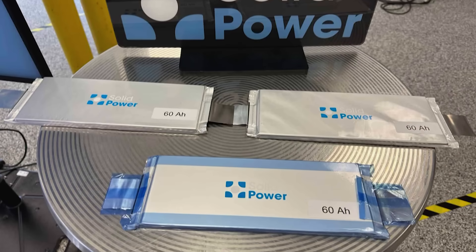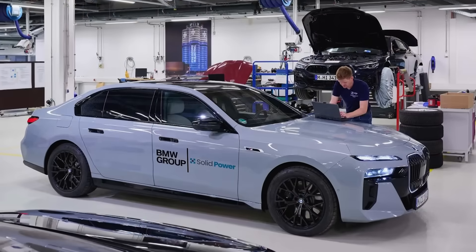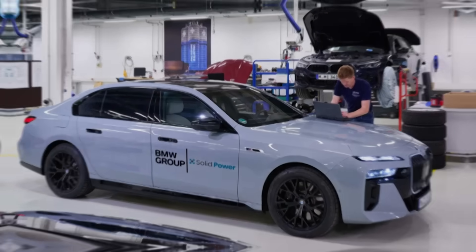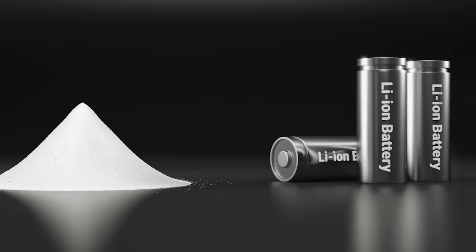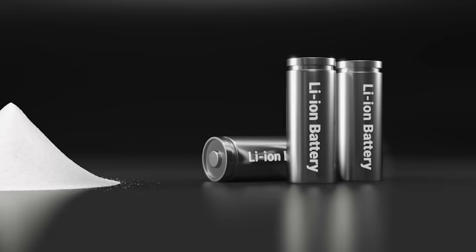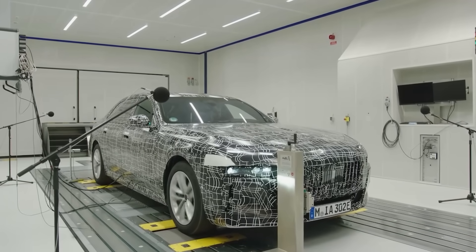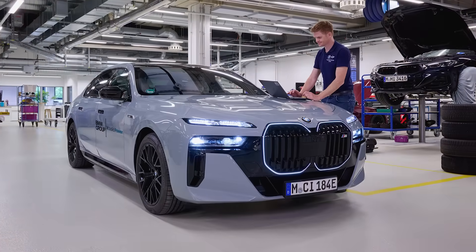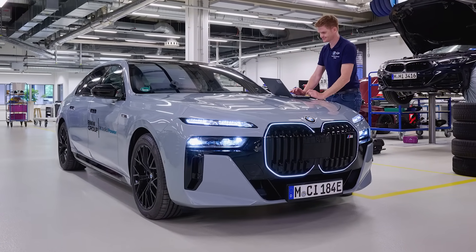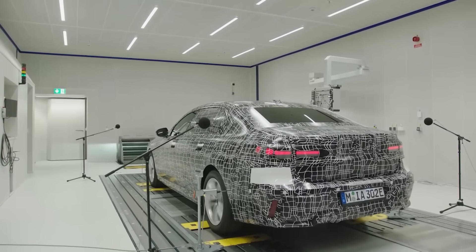SolidPower and BMW are developing a sulfide-based all-solid battery for a BMW i7 demonstrator. Sulfides matter because they can fit roll-to-roll equipment similar to today's lithium-ion lines. SolidPower has claimed cells could be 15 to 35 percent cheaper than some rivals. Yet official updates keep stressing that more development is required, which sounds familiar after earlier, more hopeful timelines.